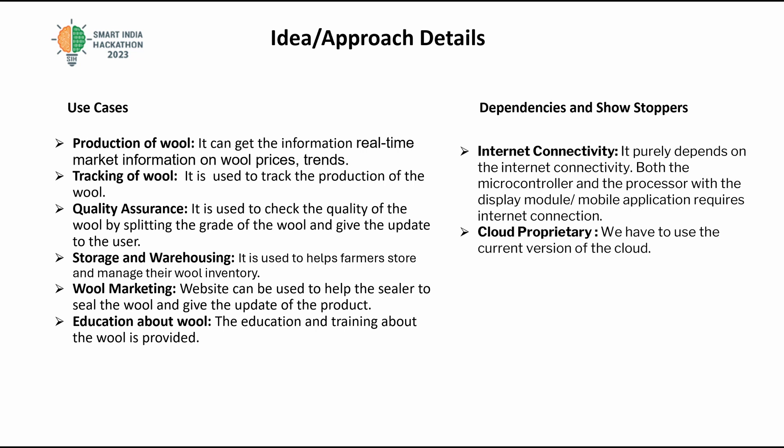Tracking of wool — it is used to track the production of the wool. Quality assurance — it is used to check the quality of the wool by splitting the grade of the wool and give the update to the user.